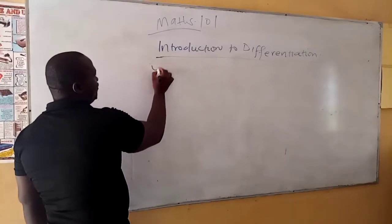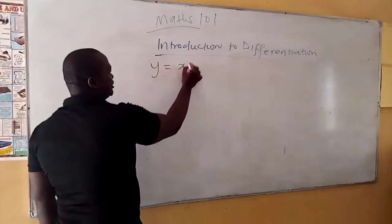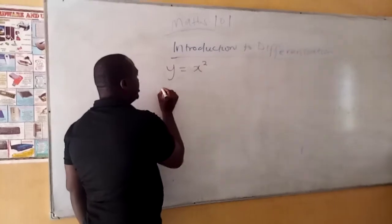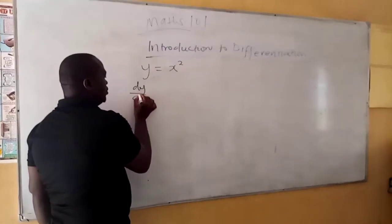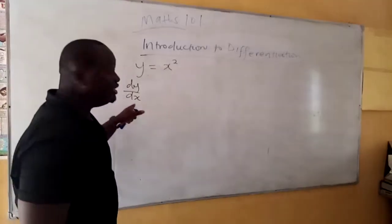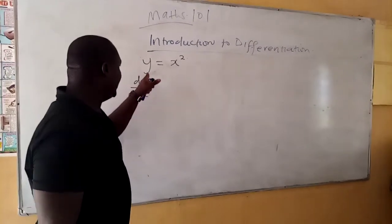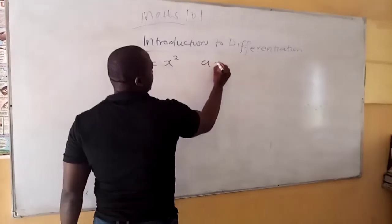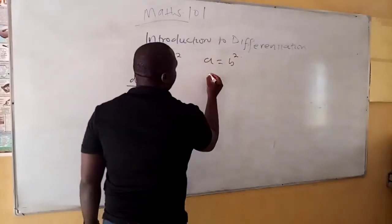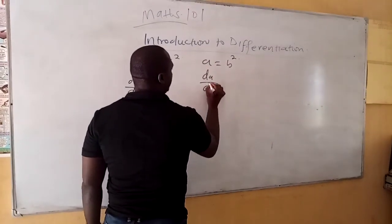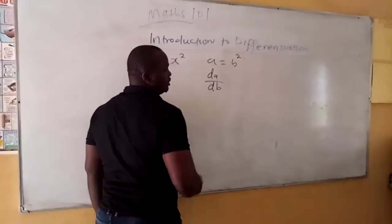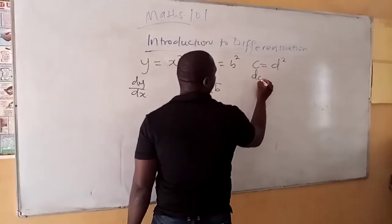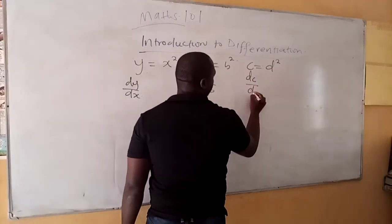If you have a function y is equal to x raised to the power of 2, and I say you should find dy over dx, the reason it is dy/dx is because you can see that there is y here and there is x here. Similarly, if I write a equals b squared, I can write da over db. Or if c equals d squared, it can be dc over dd.